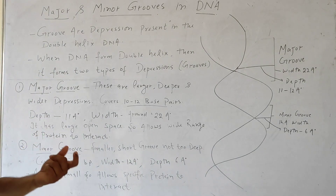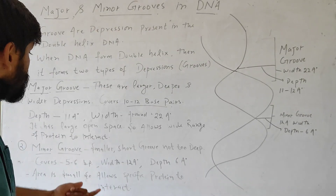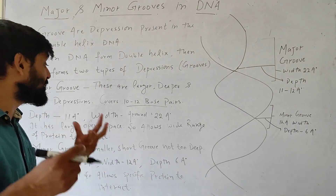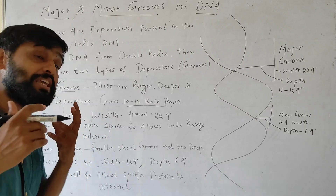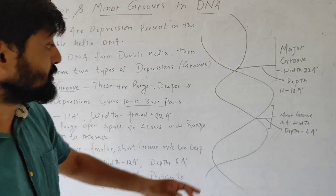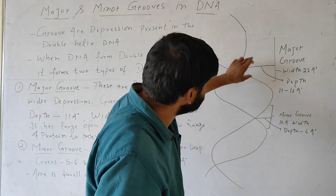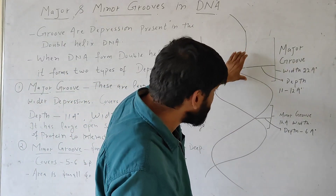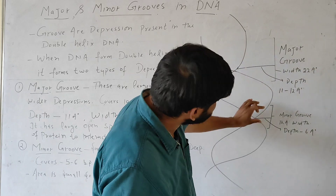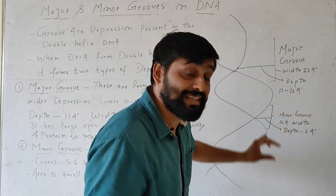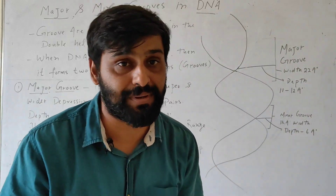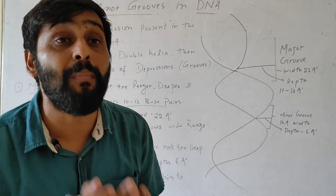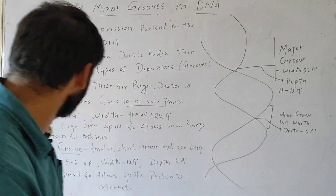These are the smaller grooves — smaller, short grooves that are not too deep. You can see that this is the larger groove, and this is the smaller one. These smaller depressions are called minor grooves.